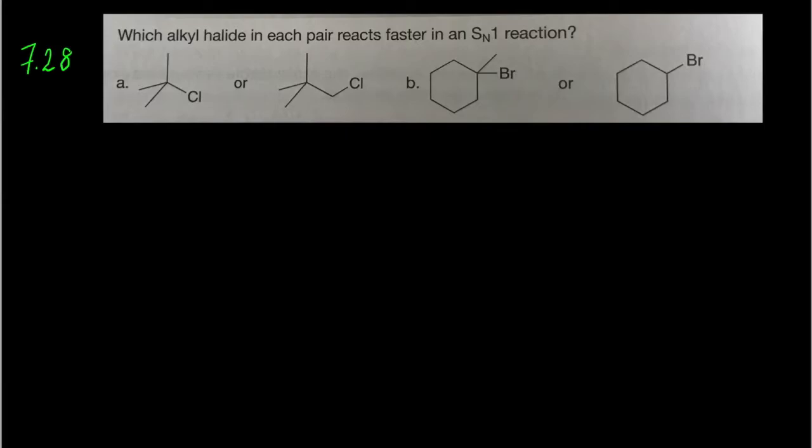Which alkyl halide in each pair reacts faster in an SN1 reaction? Remember that SN1 involves formation of carbocations, and for carbocation stability, the stability increases in the following trend: tertiary is more stable than secondary, which is more stable than primary.